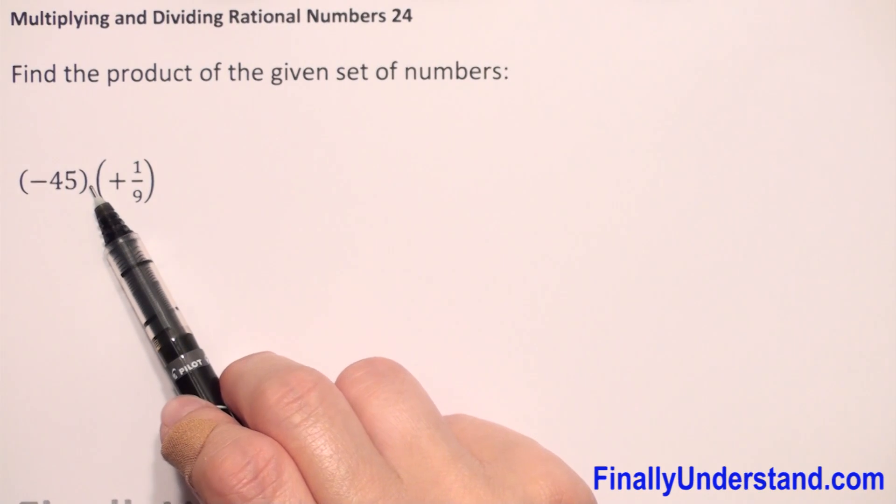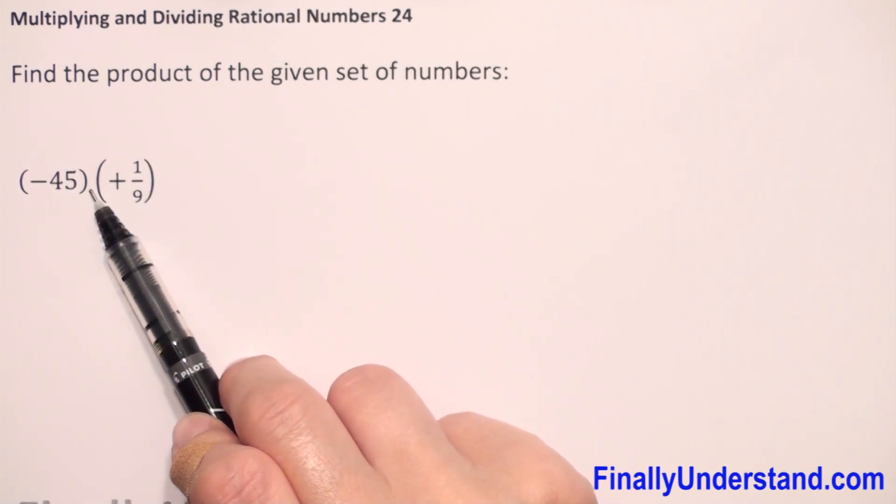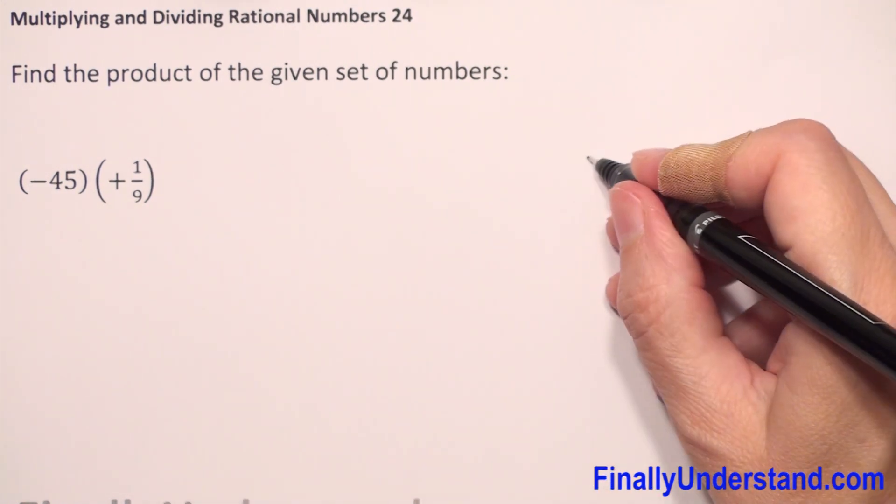Find the product of a given set of numbers. When we don't have any sign, it's always multiplication - we have to find the product, which means multiplication. We have a negative number times positive. When we multiply negative times positive or positive times negative, the answer is always negative.